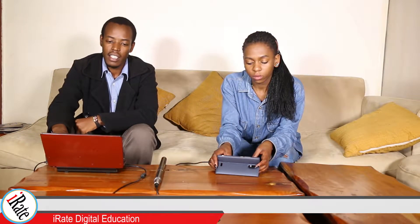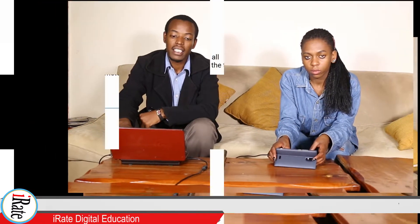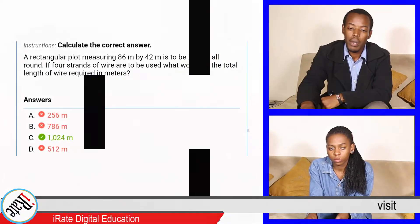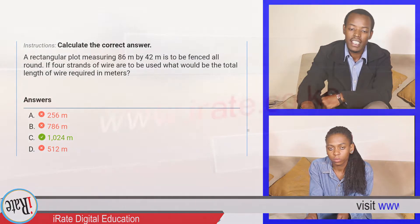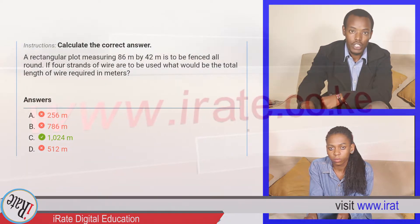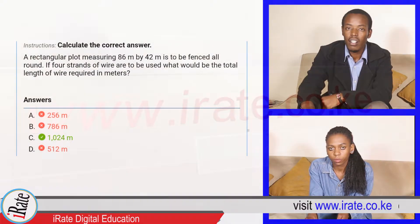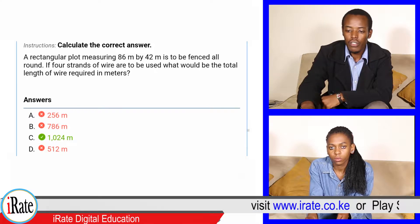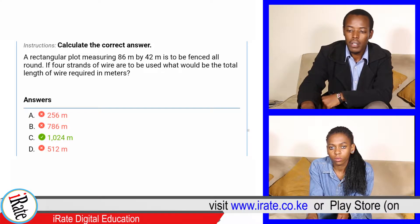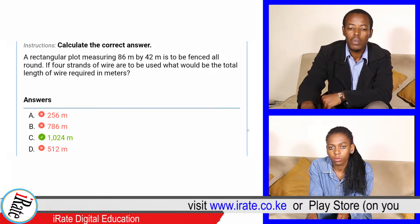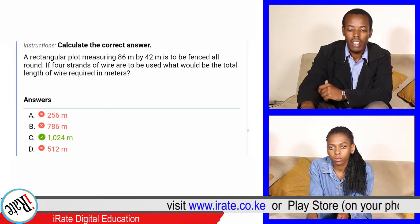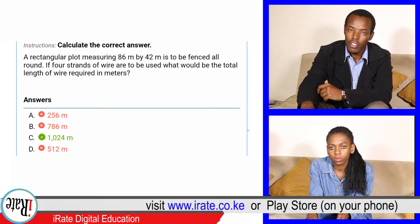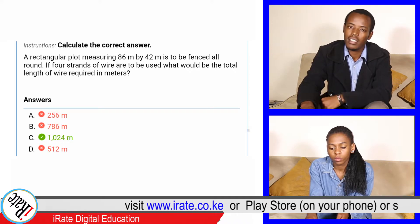A rectangular plot measuring 86 meters by 42 meters is to be fenced all round. If four strands of wire are to be used, what will be the total length of wire required in meters?